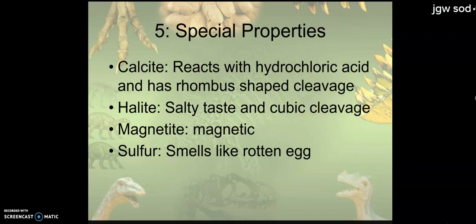And then there's always these weird guys like calcite, halite, magnetite, and sulfur that have their own special properties. Like magnetite is magnetic. It'll attract a paper clip. It'll attract metal. Sulfur smells like rotten eggs. Halite tastes like salt. Well, because it is salt. And calcite reacts with acid. And tomorrow we'll put a couple drops of acid on it and see it bubble.